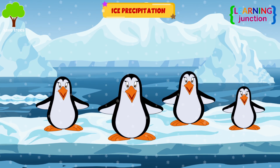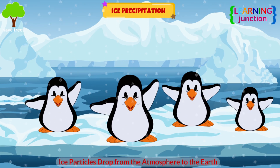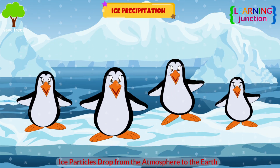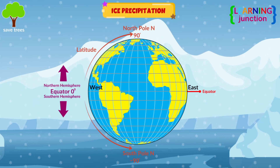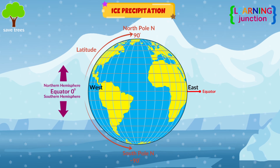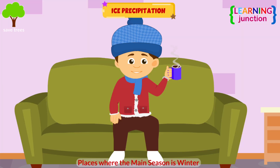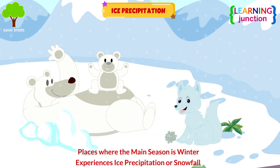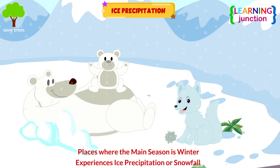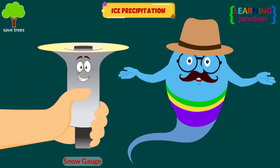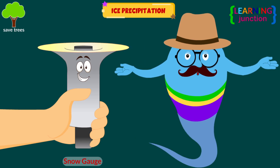Ice Precipitation: ice particles drop from the atmosphere to the Earth. Places with higher altitudes experience it a lot. The places where the main season is winter also experience a lot of ice precipitation or snowfall. A snow gauge is used to measure the amount of snowfall.